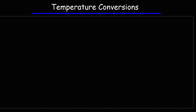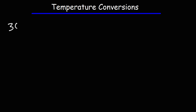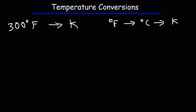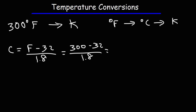Now let's talk about a challenge problem. Let's say we have 300 degrees Fahrenheit — how can we convert it to Kelvin? To do this, it's best to convert from Fahrenheit to Celsius first, and then from Celsius to Kelvin. The Celsius temperature is (F − 32) / 1.8, so that's (300 − 32) / 1.8. 300 minus 32 is 268, and 268 divided by 1.8 is 148.9. So 300 degrees Fahrenheit is 148.9 degrees Celsius.